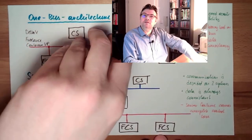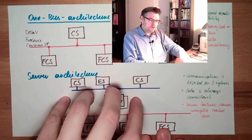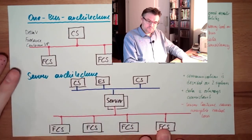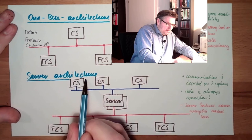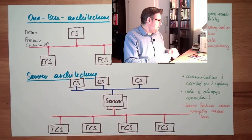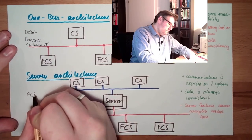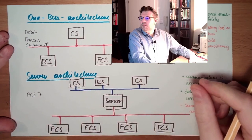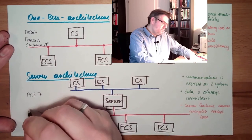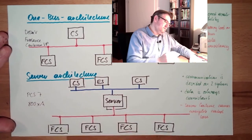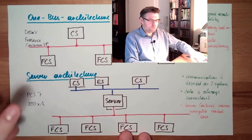With the one bus architecture, the technical challenge is data consistency and heavy bus load. With the server architecture, the technical challenge is making the server highly available. Examples of the server architecture are PCS 7 from Siemens, and from ABB there is the System 800xA. These are examples of the server architecture.